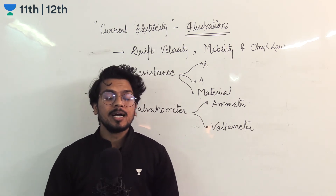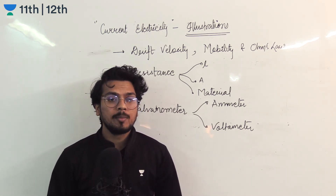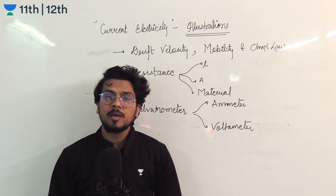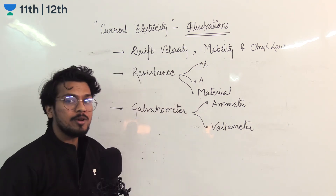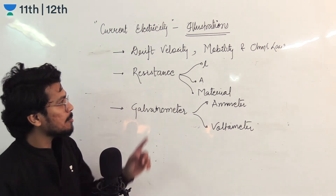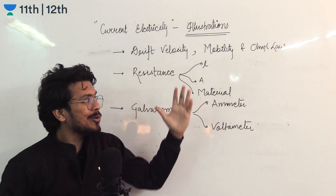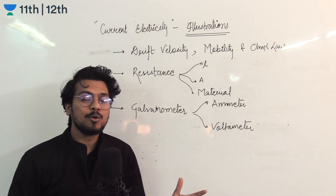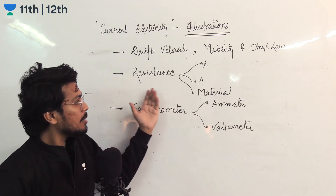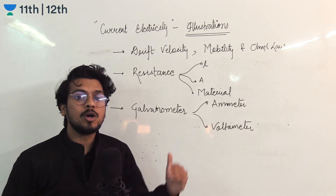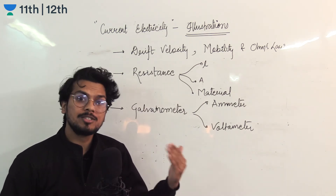All these illustrations, if you have prepared them, then for 1-mark or 2-mark questions, you will not miss any marks in boards. And in JEE Main and NEET, you will find easy four marks. So which illustrations are we going to see? First of all: drift velocity, mobility, charge carrier, Ohm's law, resistivity and resistance — all these physical formulas. Then, we need resistance and its dependency on length, area, material, and resistivity.